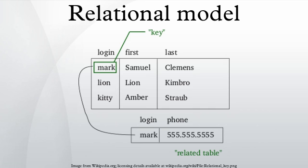A table is an accepted visual representation of a relation. A tuple is similar to the concept of a row. A relvar is a named variable of some specific relation type, to which at all times some relation of that type is assigned, though the relation may contain zero tuples. The basic principle of the relational model is the information principle: all information is represented by data values and relations.